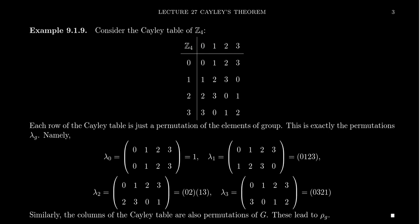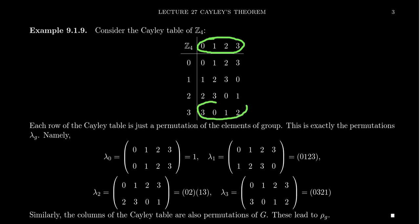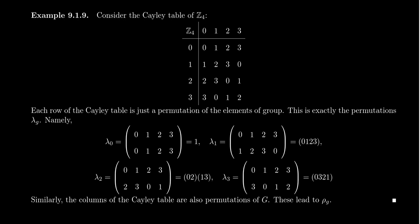For the second row, 0→2, 1→3, 2→0, 3→1 — that's a product of two 2-cycles: (0 2)(1 3). For the third row, 0→3, 1→0, 2→1, 3→2, giving the 4-cycle (0 3 2 1). So the rows of the Cayley table correspond exactly to these permutations.